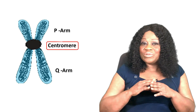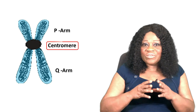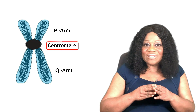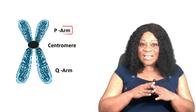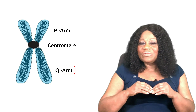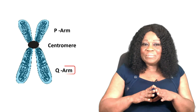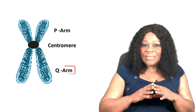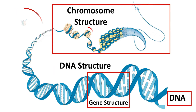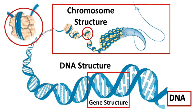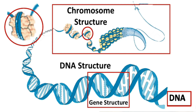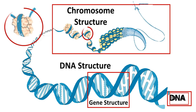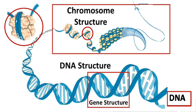Chromosomes are divided into two sections with a constriction point called the centromere. The short arm of the chromosome is known as the p-arm and the long arm is called the q-arm. Each chromosome is made up of DNA tightly coiled many times around proteins called histones that support the structure. Without such packaging, DNA molecules would be too long to fit inside cells.